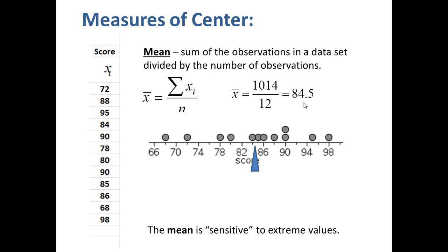Now we say that the mean is sensitive to extreme values. Suppose the person who got the lowest score of 68 instead earned a score of 0. That would move the mean down from 84.5 to 78.9. The mean is sensitive to extreme values because every individual data value is factored in when calculating the mean.